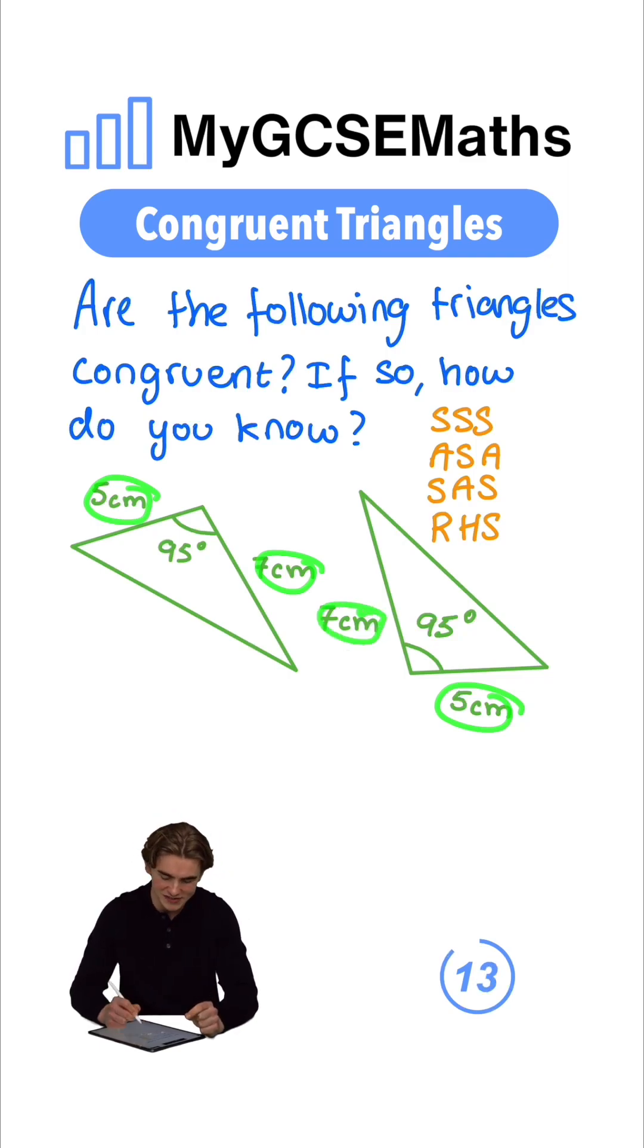And do we have an angle in between them which is the same? Well, this angle is 95 degrees and this one is also 95 degrees. So we can say that yes, they are congruent. And how do we know? We know because we have side, angle, side.